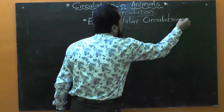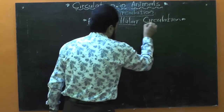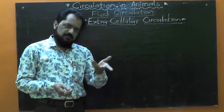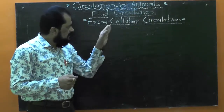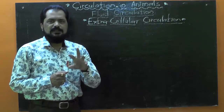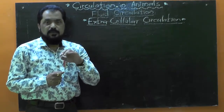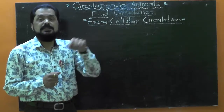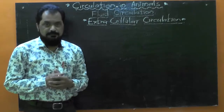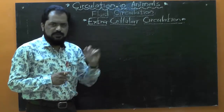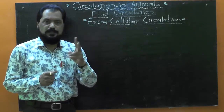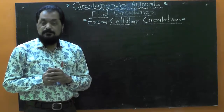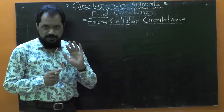Extracellular fluid circulation: the name itself indicates — 'extra' stands for outside, 'cellular' stands for cell, and 'circulation' stands for transportation. This type of fluid circulation does not involve circulation of body fluid within the cell but is seen outside the cell, within the body of that animal. Extracellular circulation is basically of two types: environmental fluid circulation and body fluid circulation.